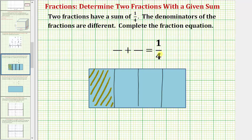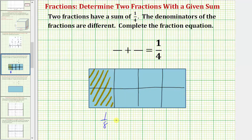Now to find two fractions that have a sum of one-fourth, we will partition the rectangle into additional pieces of the same size. Now the rectangle is cut into eight equal pieces, so each piece would be one-eighth. We should recognize that one-eighth plus one-eighth equals one-fourth. But our fractions must have different denominators, so we can't use this equation — but we can use one of the fractions.